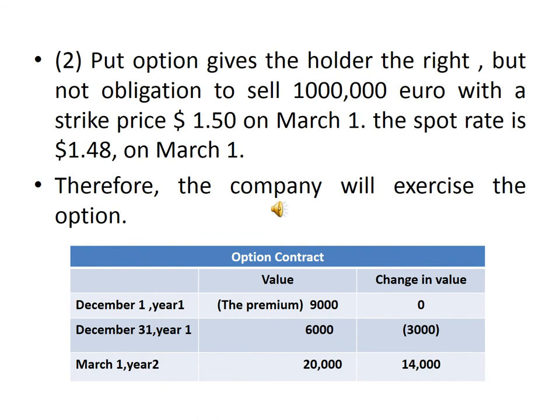Put option gives the holder the right but not the obligation to sell 1 million euro at a strike price of $1.50. On March 1st, the spot rate is $1.48, so the company will exercise the option. The following table summarizes the value and change in value of the option contract: on December 1st, the value equals the premium of $9,000; by year-end, the option value decreased to $6,000, a loss of $3,000; on March 1st, the option contract value is $20,000, achieving a gain of $14,000.